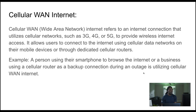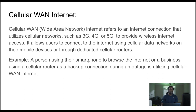Now we're going to get into wide area network concepts. A cellular WAN refers to an internet connection that utilizes cellular networks such as 3G, 4G, or 5G to provide wireless internet access. It allows users to connect to the internet using cellular data networks on their mobile devices or through dedicated cellular routers. A person using their smartphone to browse the internet is using a cellular wide area network, and using a cellular router as a backup connection during an outage is another example.